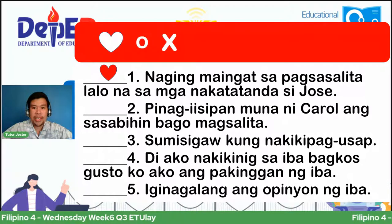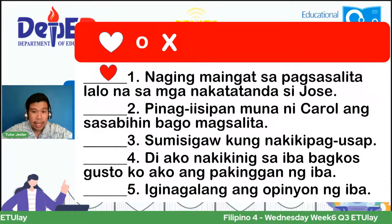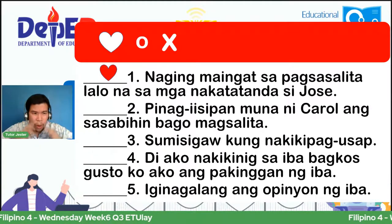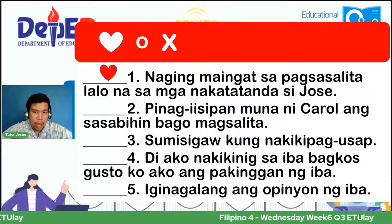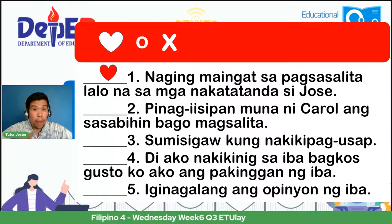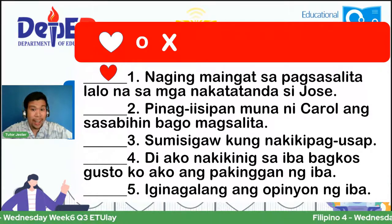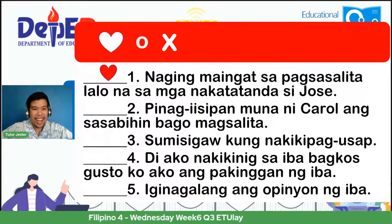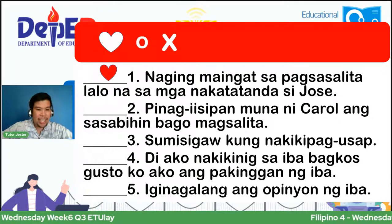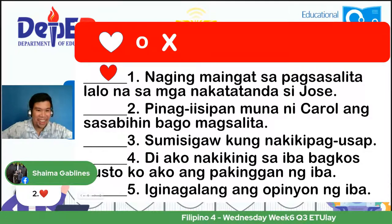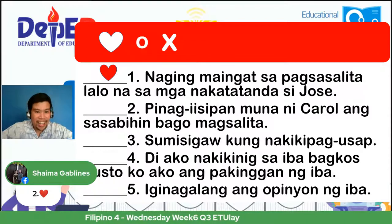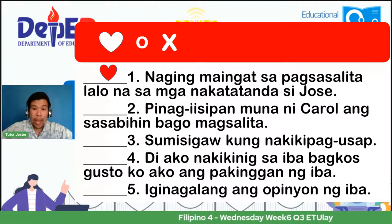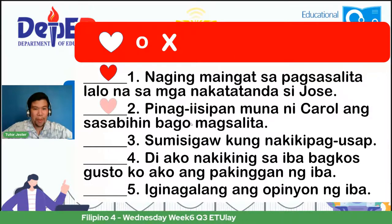Number two: pinag-iisipan muna ni Carol ang kanyang sasabihin bago magsalita. Bago niya bigkasin ang mga salitang nais niyang sabihin, nag-iisip muna siya — makatutulong ba ito, makasasakit ba ng damdamin? Puso ba o X? Talaga nga naman puso, ayon kay Martin, kay Anna, kay Sid, kay Aida, kay Lorna, kay Zai, kay Arkin. Ang gagaling ng ating mga mag-aaral. Number two, it's indeed puso.